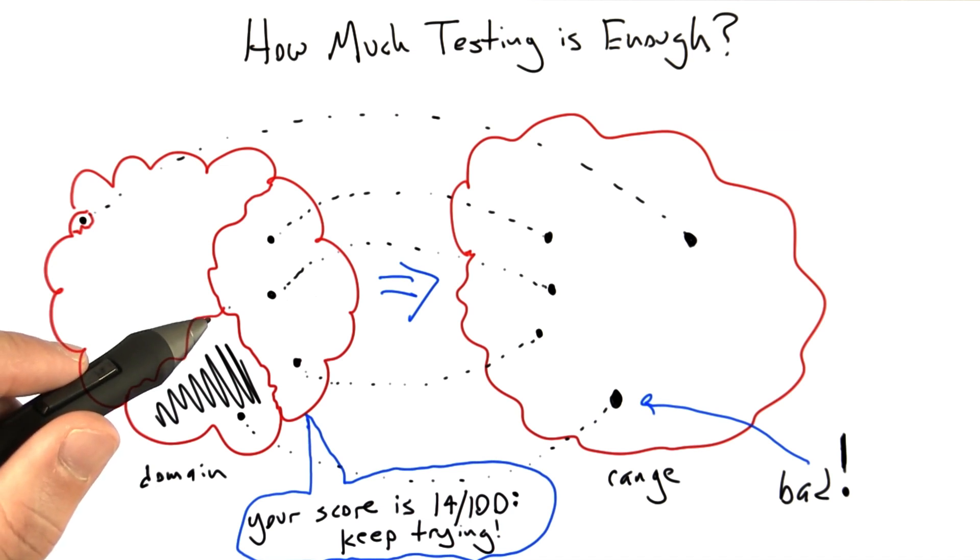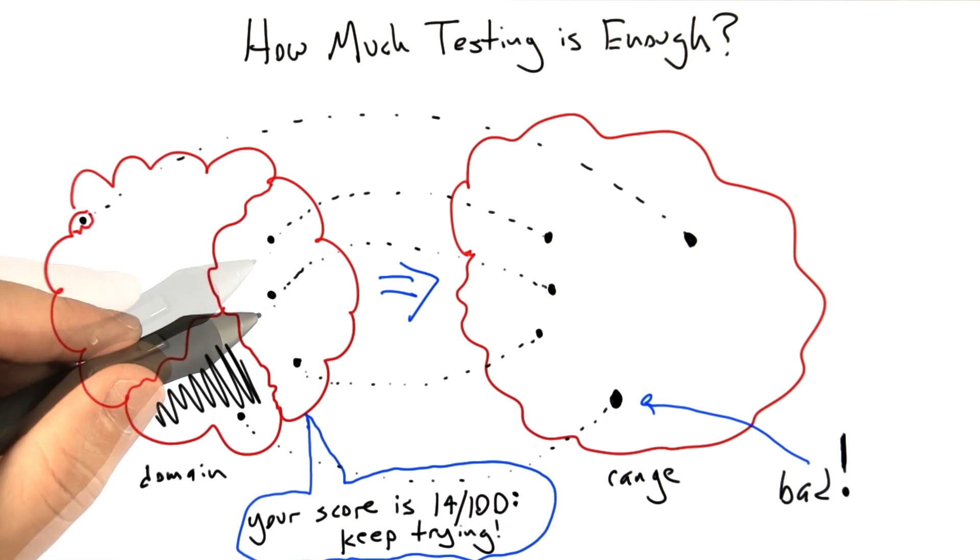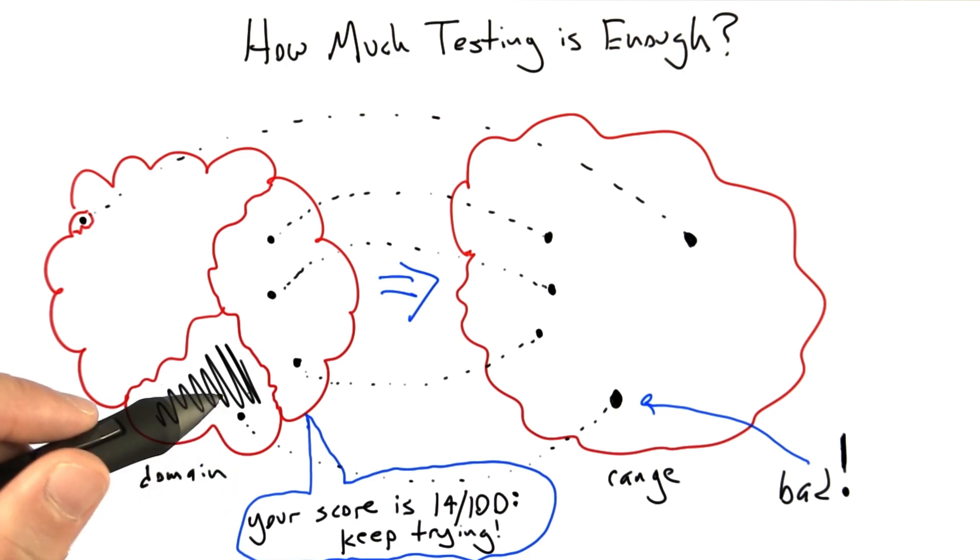Finally, it would be nice if we could take a large test suite, one maybe that takes several days to run, and identify parts of the test suite that are completely redundant. That is to say, parts of the test suite that test exactly the same parts of the input domain, even though they occupy different parts of the input domain, have roughly the same testing effect on the system. Assigning a score to our testing efforts can let us do that as well.